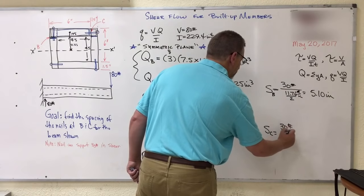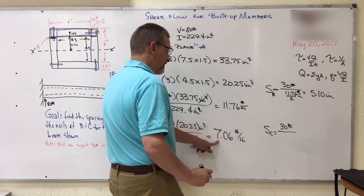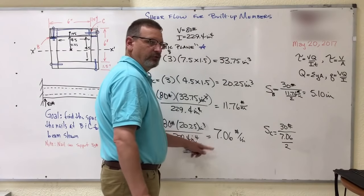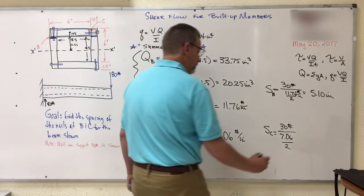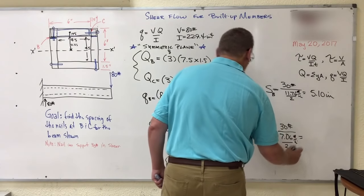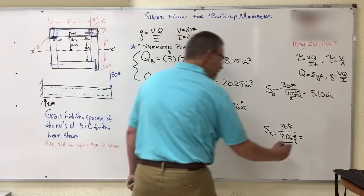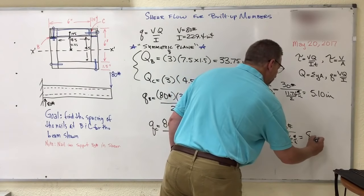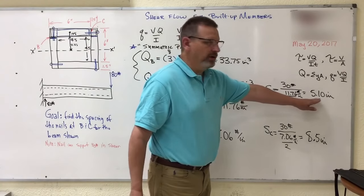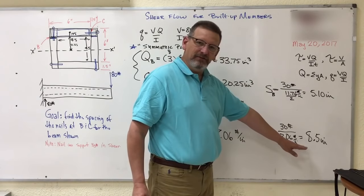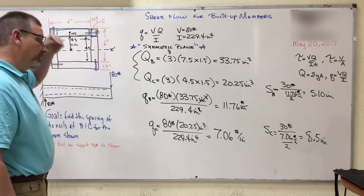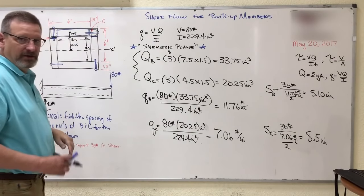And then spacing for the C nails is going to be the same thing, 30 divided by 7.06. But again, there's two rows of those nails, one on top, one on the bottom. So that's pounds per inch. And so that's going to be, I've got 8.5 inches. So every 5.1 inches, you need to put a nail. Every 8.5 inches on the vertical side, which is the horizontal nail, you need to put a nail.